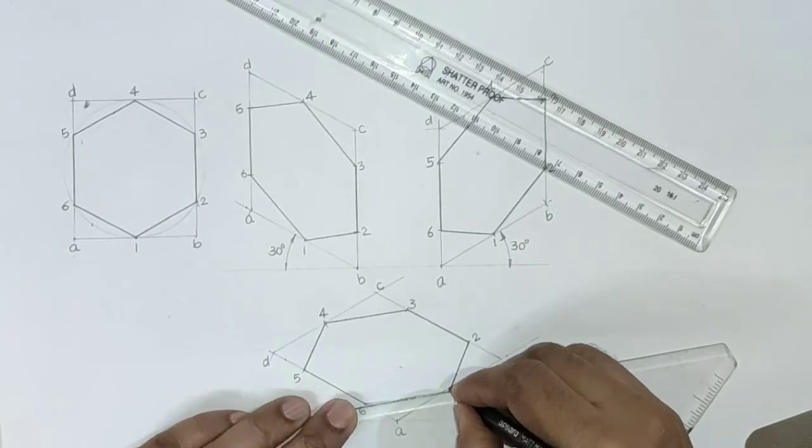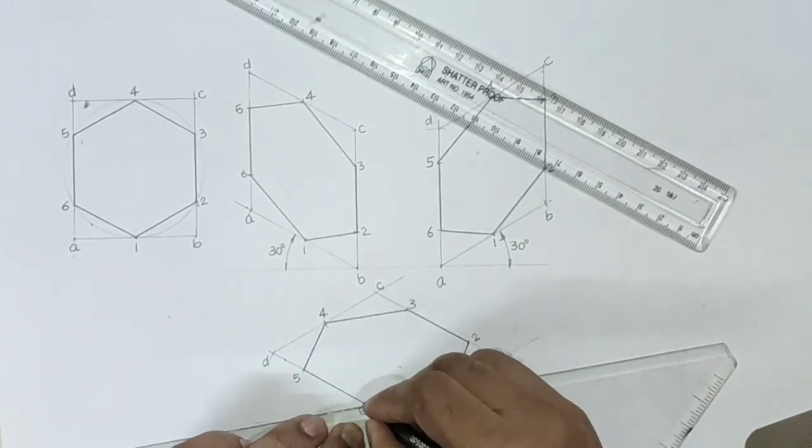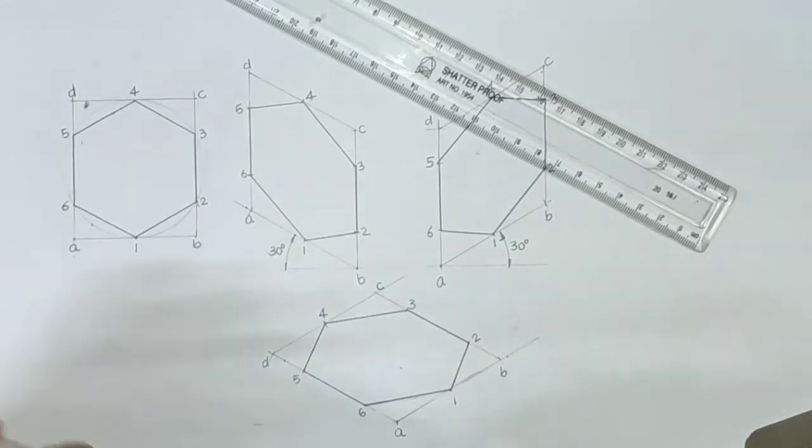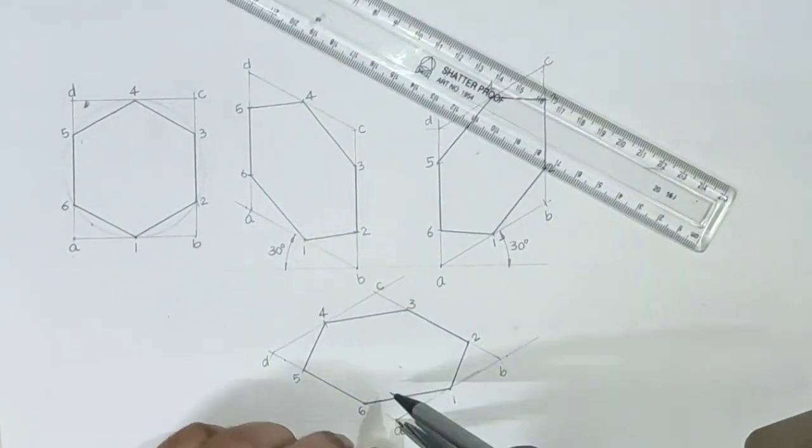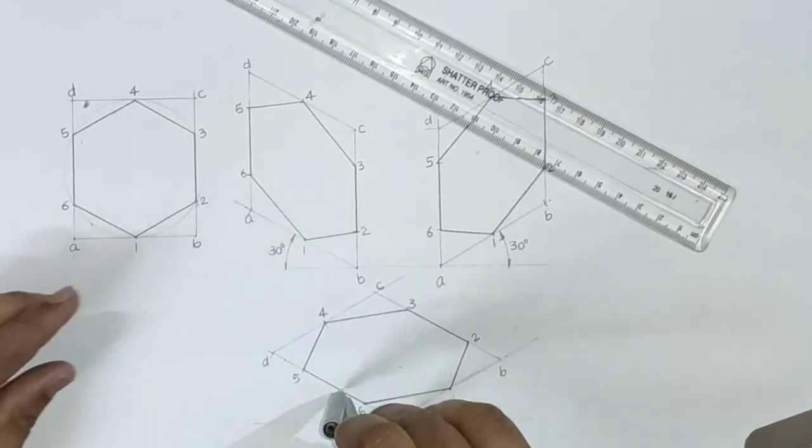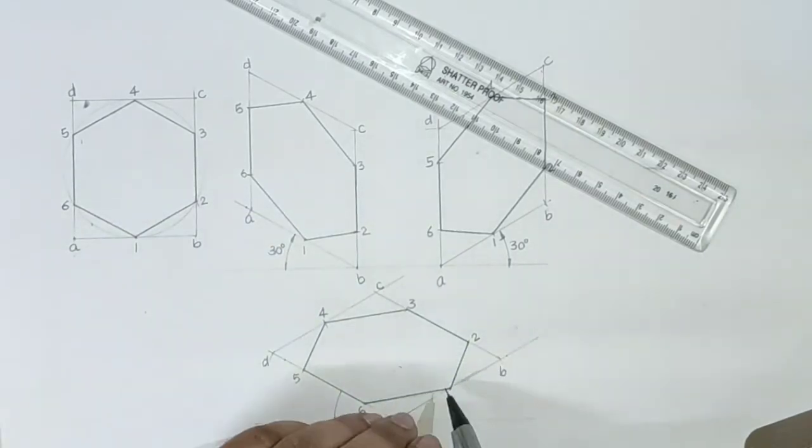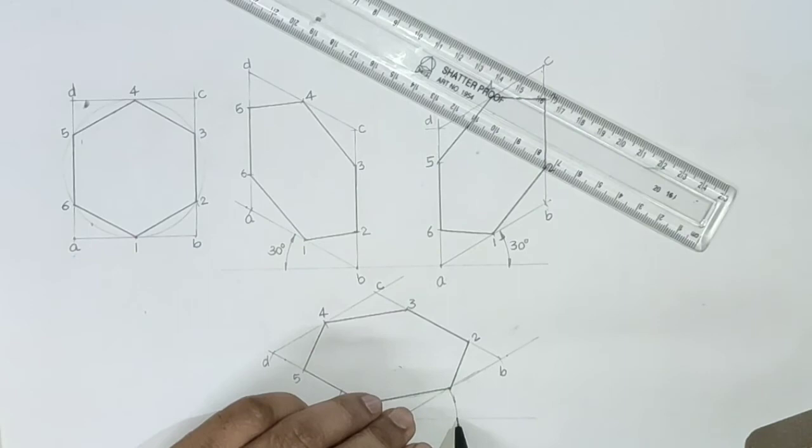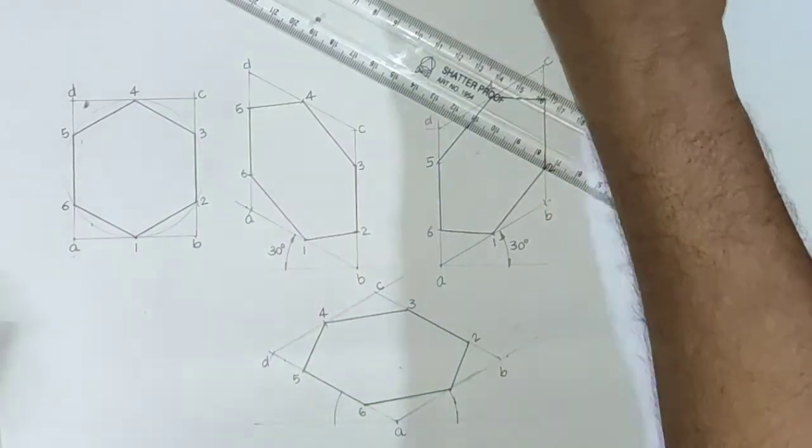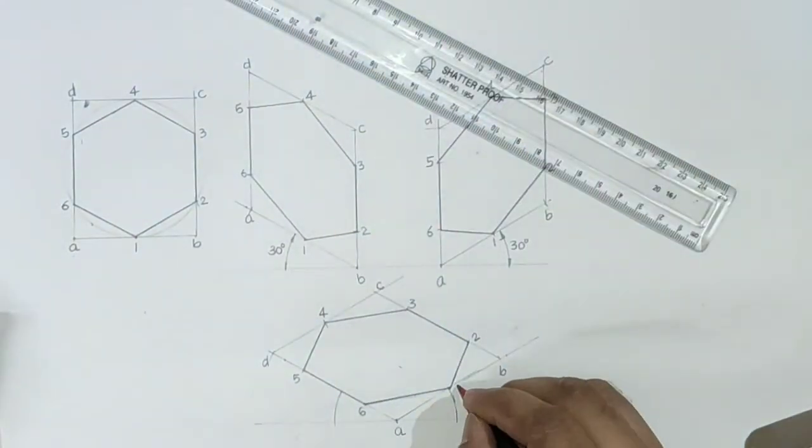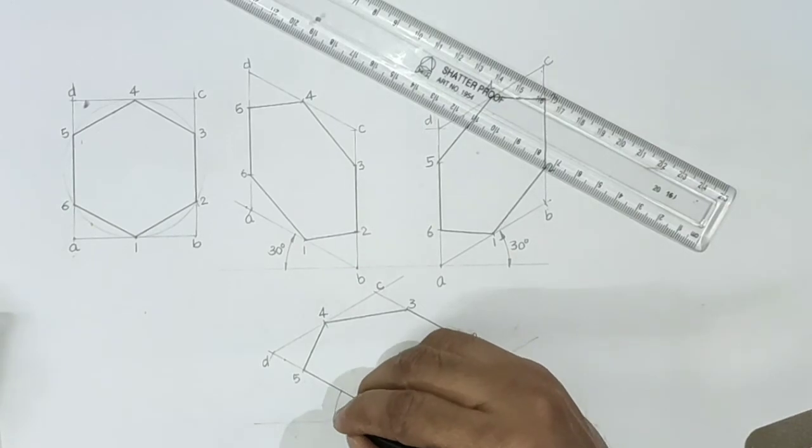Then we get isometric of hexagon in top plane. These two angles are 30 degrees. Vertex number one at 30 degrees.